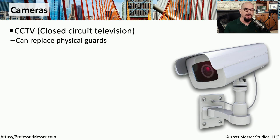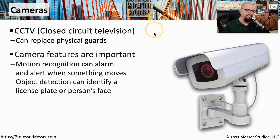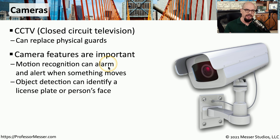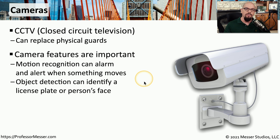If you have cameras monitoring your facility, then you're probably using CCTV, or closed circuit television. These are cameras that can provide advanced capabilities, such as motion recognition, so you don't have to constantly be watching the camera. Instead, the camera will tell you when there's any motion. You might also have these devices perform object detection, or be able to identify a license plate or a person's face.